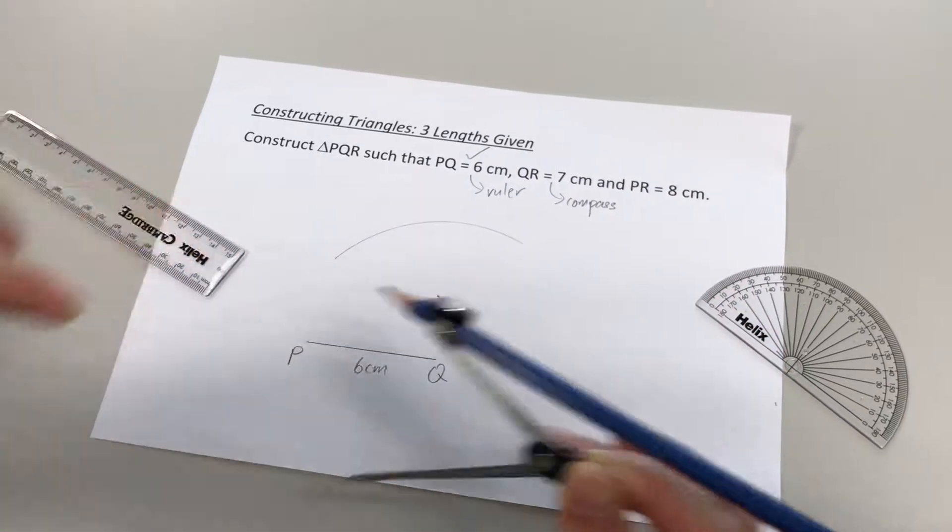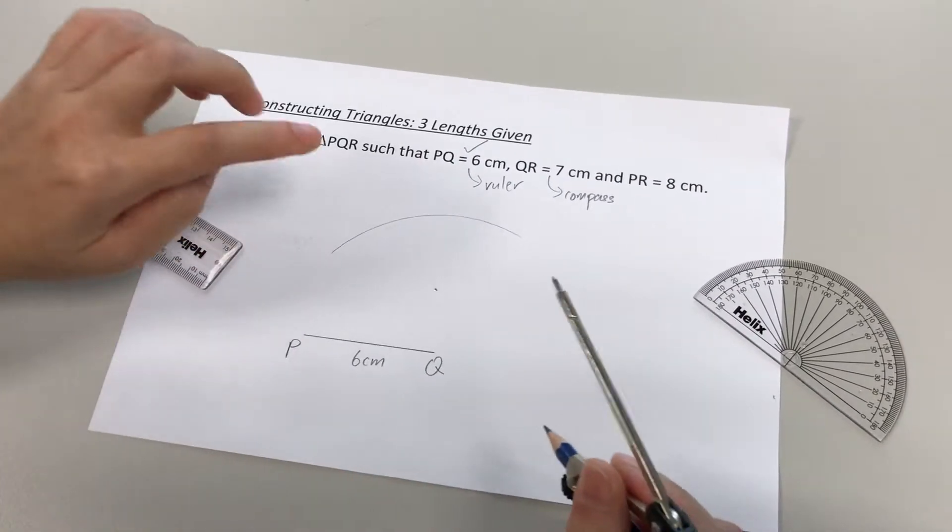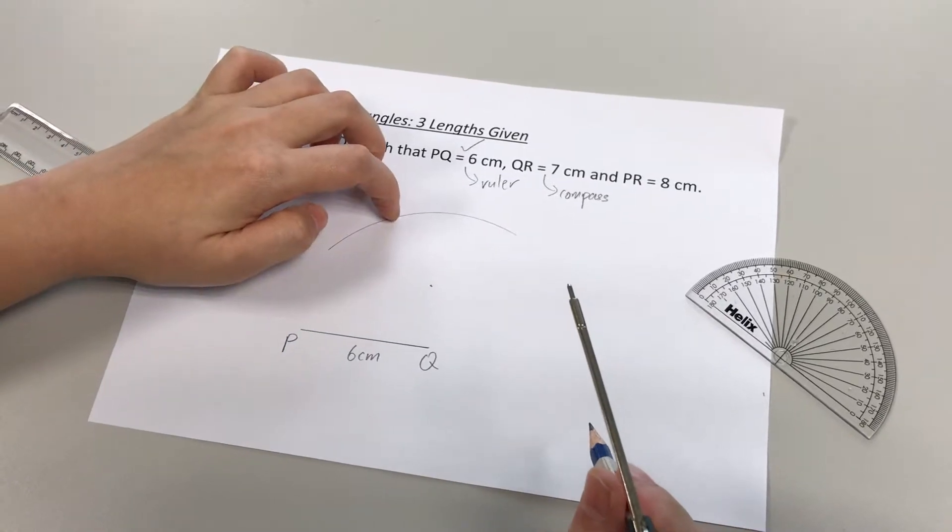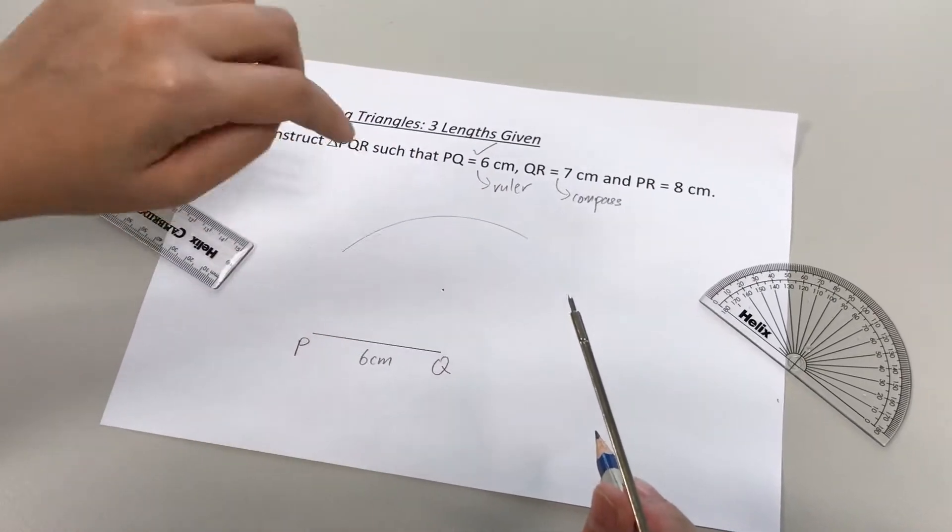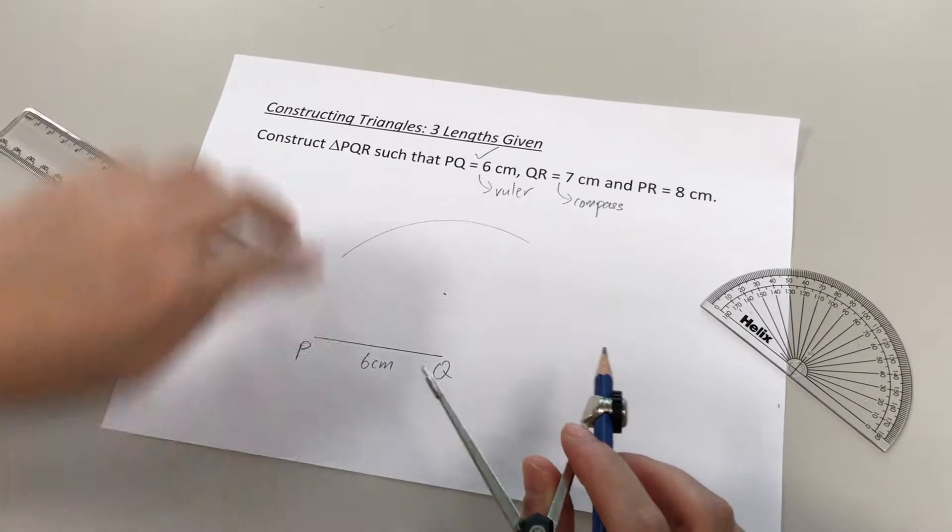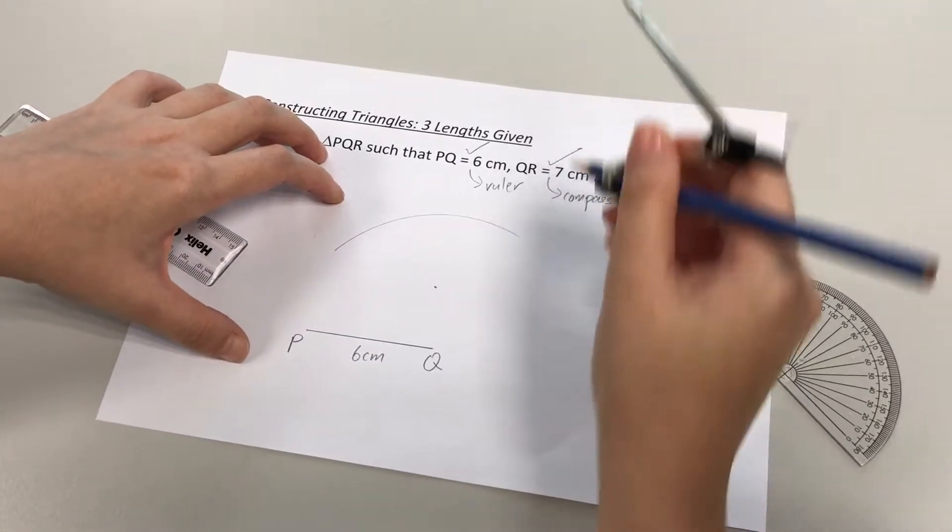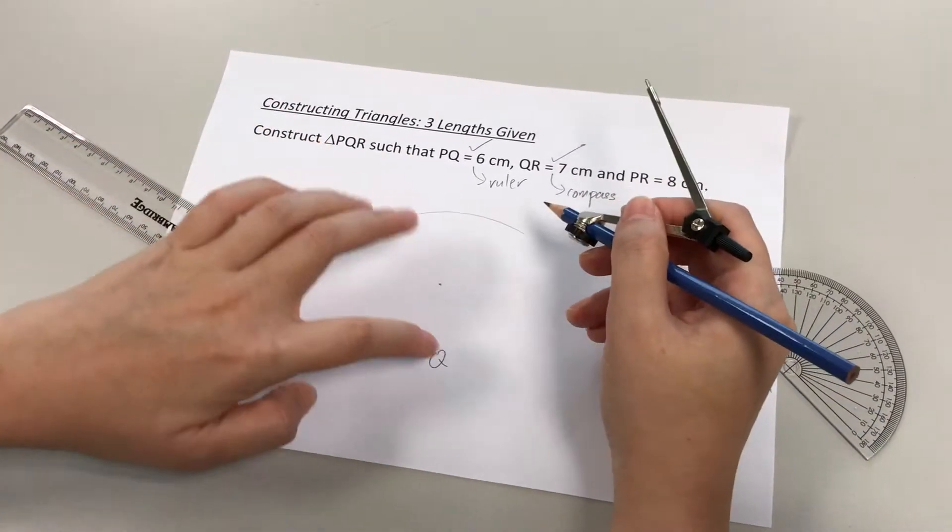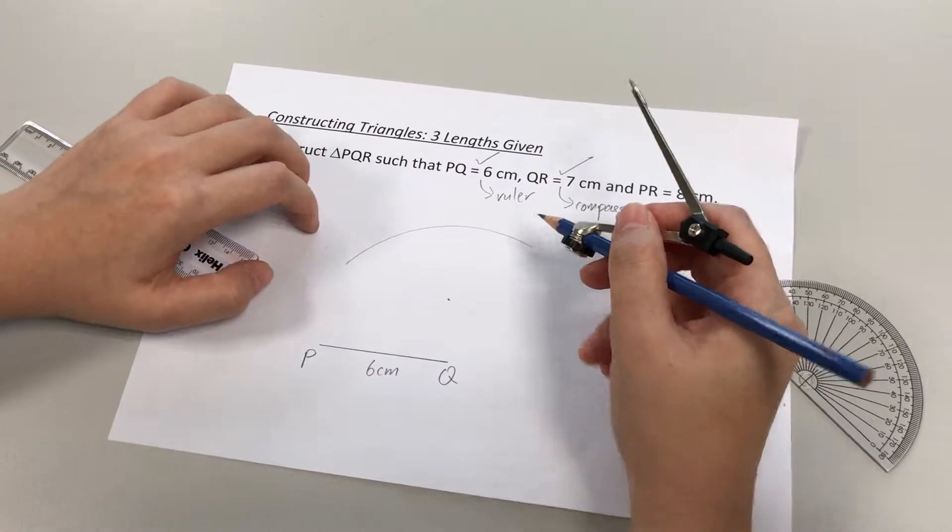All right, once through, draw the curve. Please make sure you do not erase this, okay, as this would be given marks as part of your working in drawing the triangle. All right, so we have just used this information. I've drawn my arc QR 7cm using the compass.